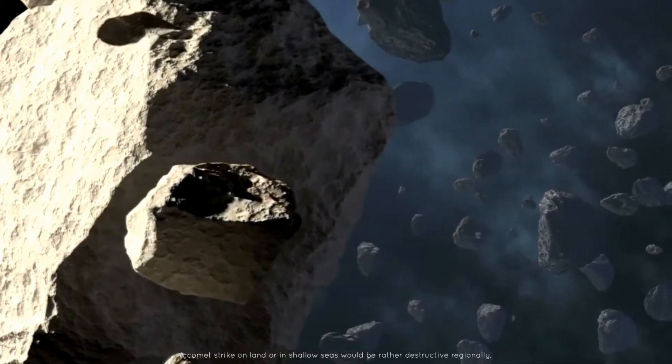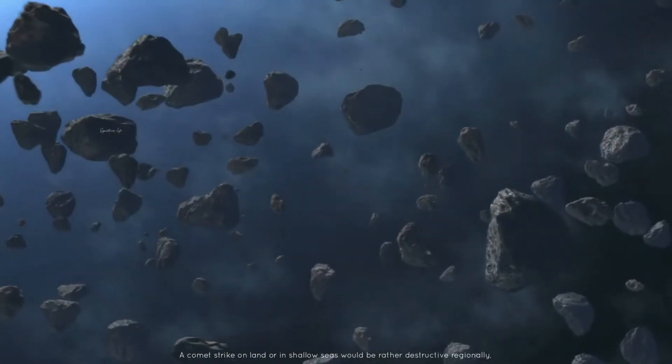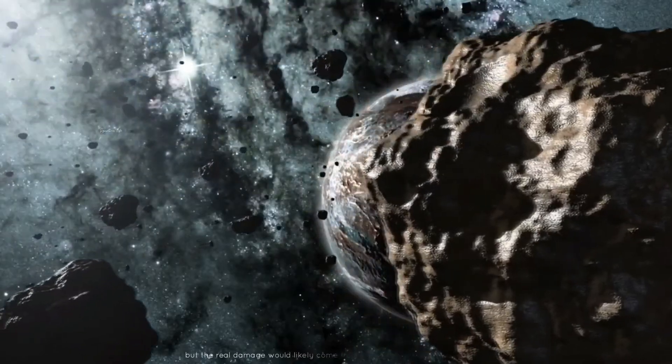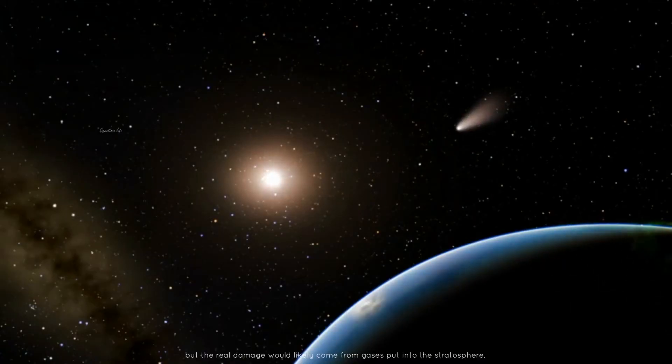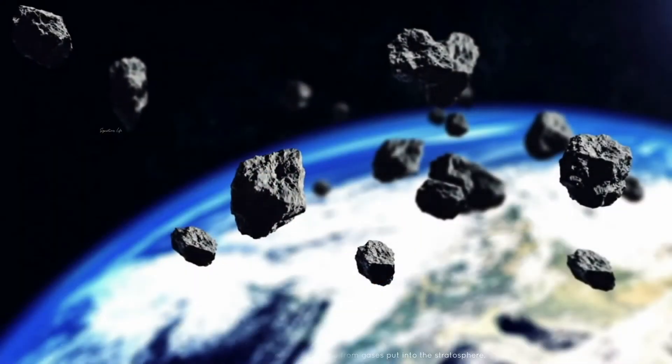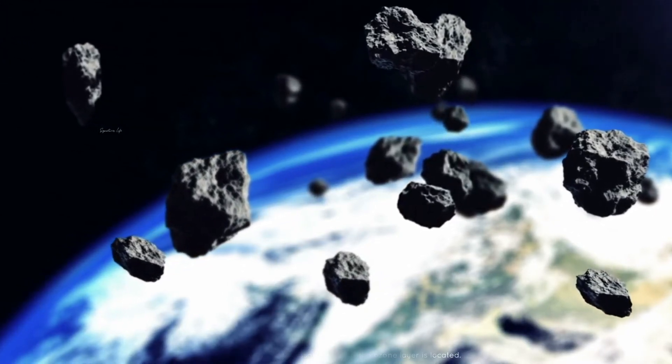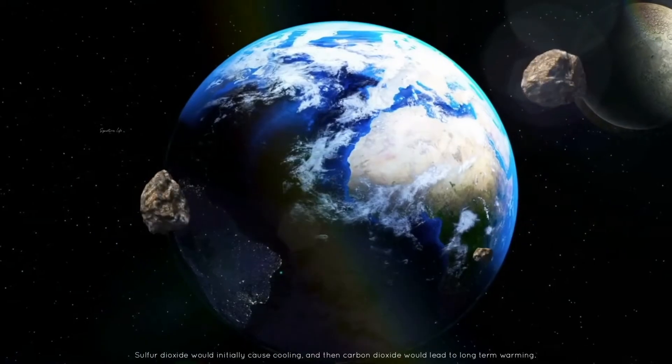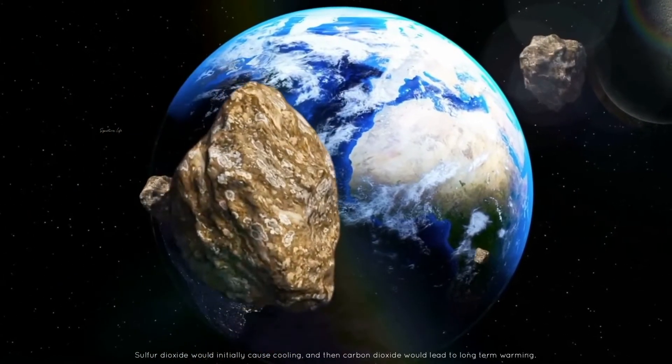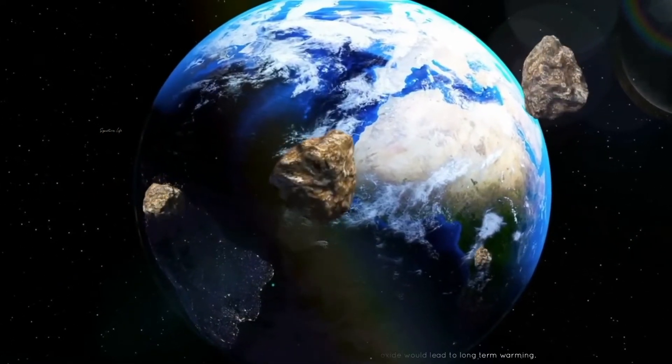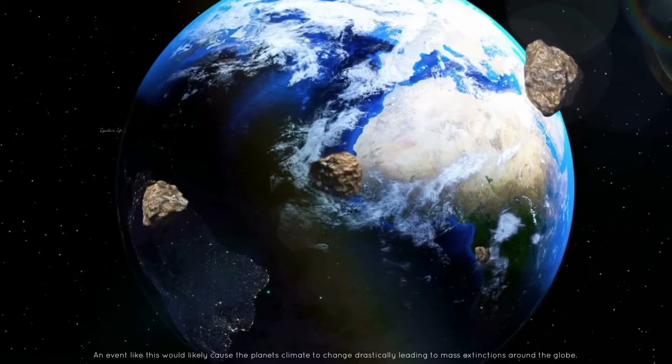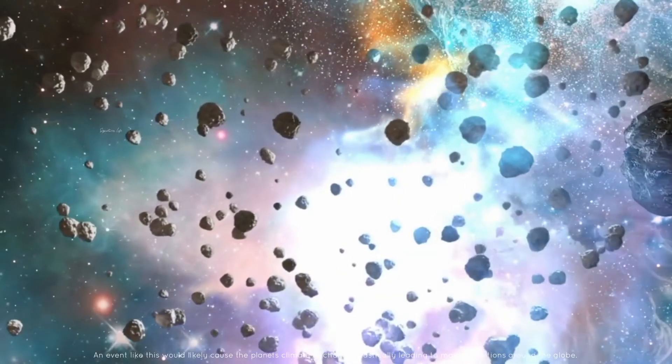A comet strike on land or in shallow seas would be rather destructive regionally, but the real damage would likely come from gases put into the stratosphere, the part of Earth's atmosphere where the ozone layer is located. Sulfur dioxide would initially cause cooling, and then carbon dioxide would lead to long-term warming.